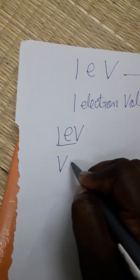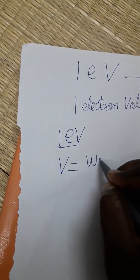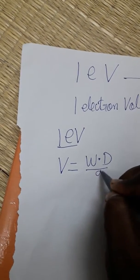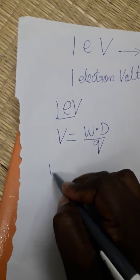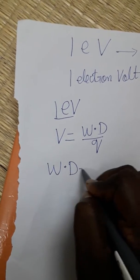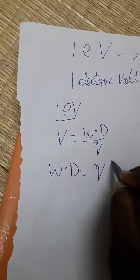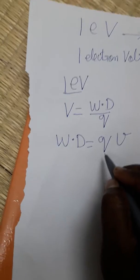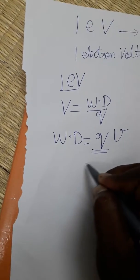We know already voltage is equal to work done by charge. That means work done is equal to charge into voltage. Here the charge is representing the electron.